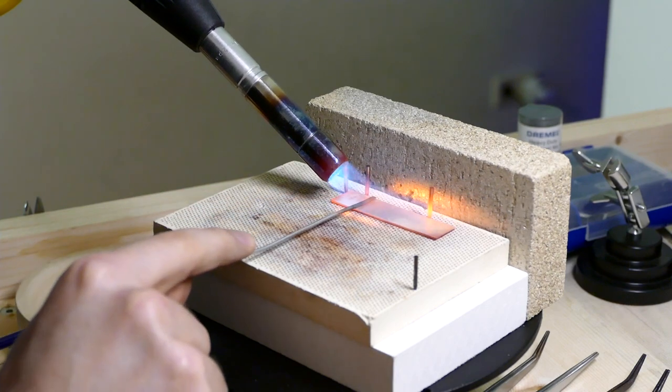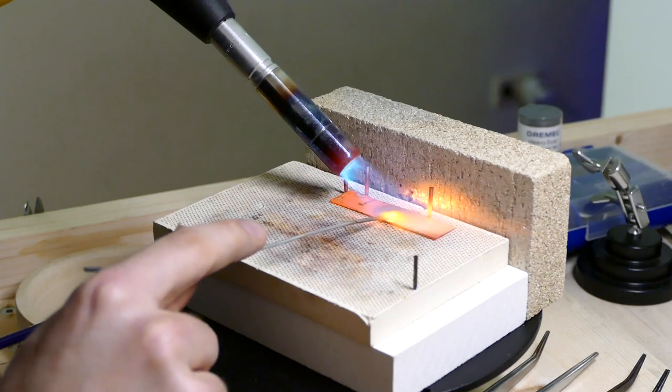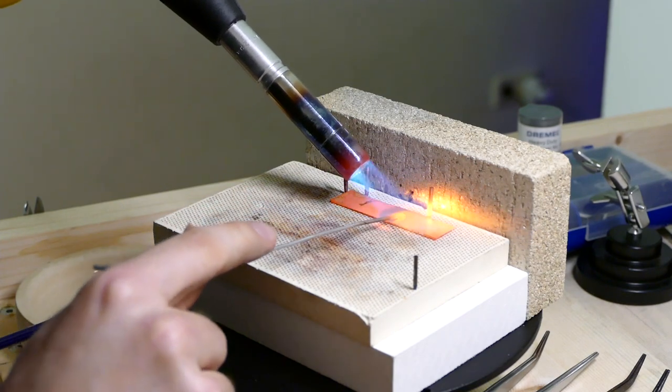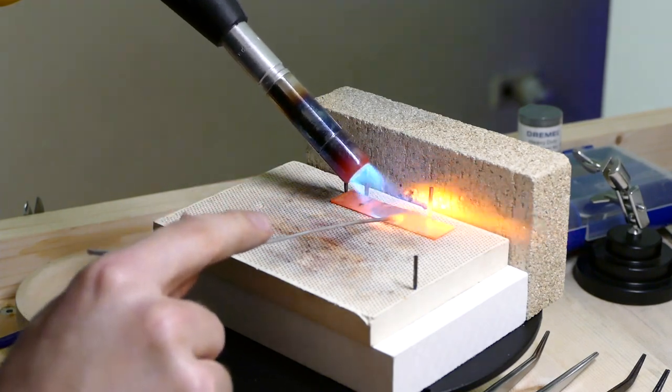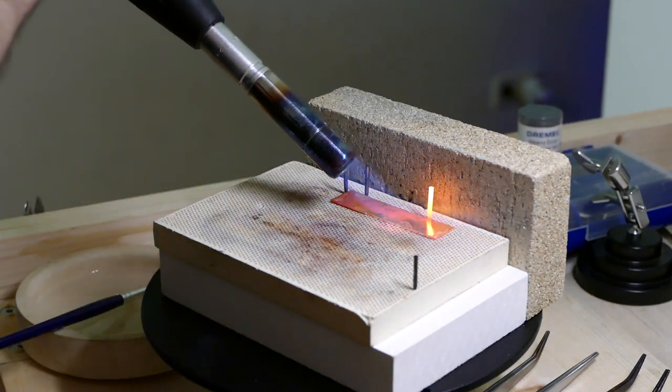This was mostly because the silver sheet I was using was quite thin in comparison to what I usually use, which led to the heat getting dispersed quicker and it all melting together.